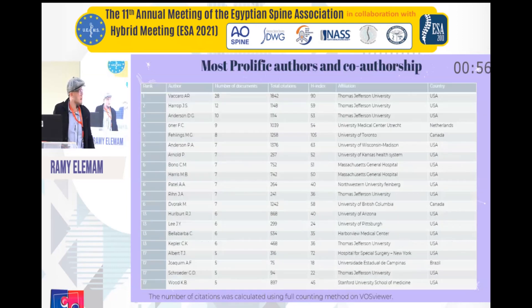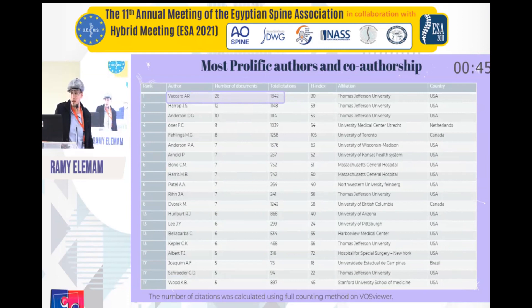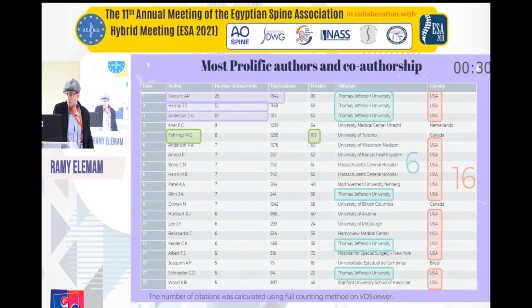This is a list of the most prolific authors and co-authorship. It comes as no surprise that Vaccaro from Thomas Jefferson University came in first place with 28 publications, representing around 20% of the entire publication count. In second place came Oner JS with 12 publications, and then Anderson DJ with 10. Most of the top 20 publications came out of the USA, and Thomas Jefferson University had six of the most prolific authors.